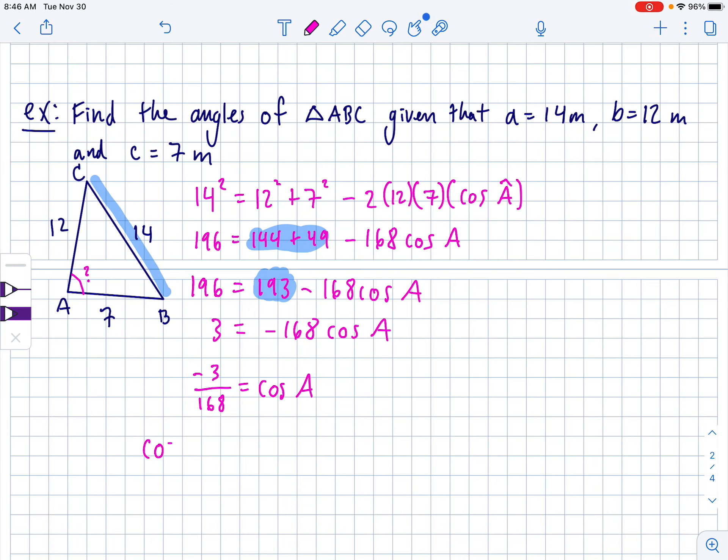So if you subtract 196 minus 193, you get three is equal to negative 168 cosine of A. Then we can divide by negative 168 to get negative three over 168 is equal to cosine of A. And then you can do a cosine inverse, making sure you are in degree mode in your calculator. Once again, from here on out, degree mode is your friend. Cosine inverse negative three divided by 168 is 91.02. They're doing like three sig figs. So say 91 degrees is about angle A.